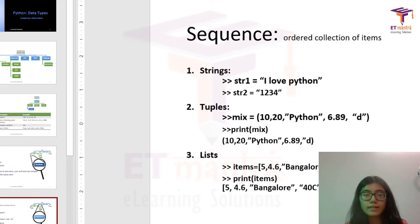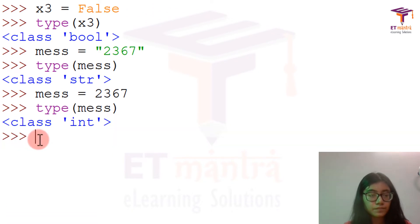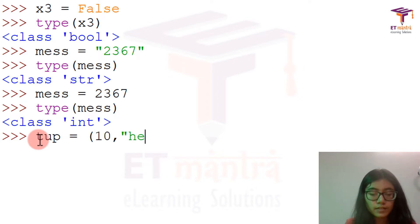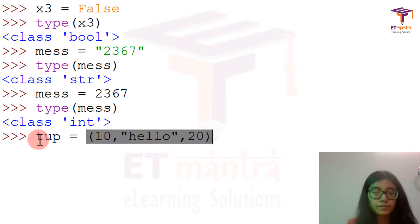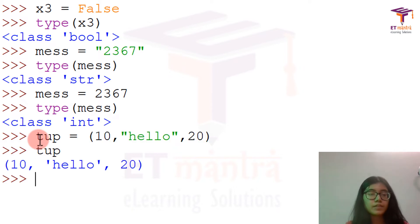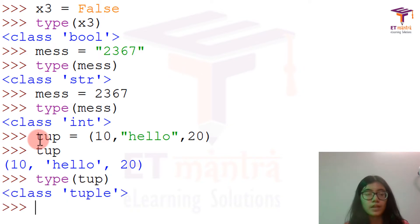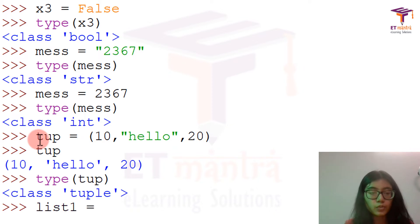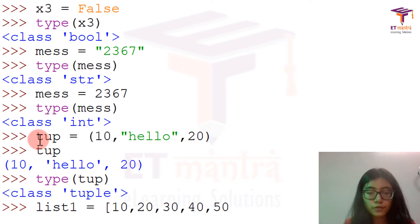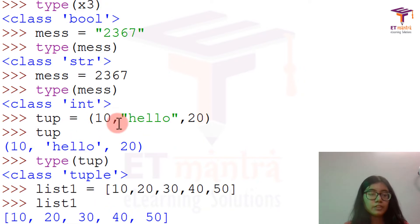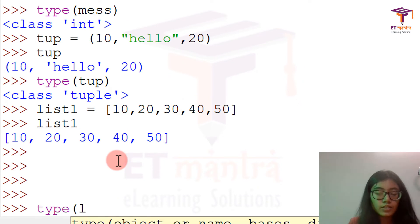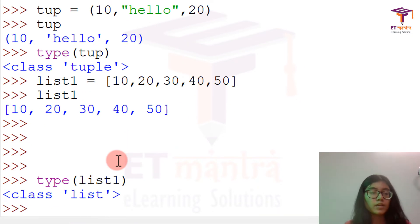Let's go back to Python and create a tuple: tuple equals (10, 'hello', 20). When we call tuple and check the type, it shows it's a tuple. Now I'm going to create list1 equal to [10, 20, 30, 40, 50]. When I call list1 and check the type of list1, it is list.